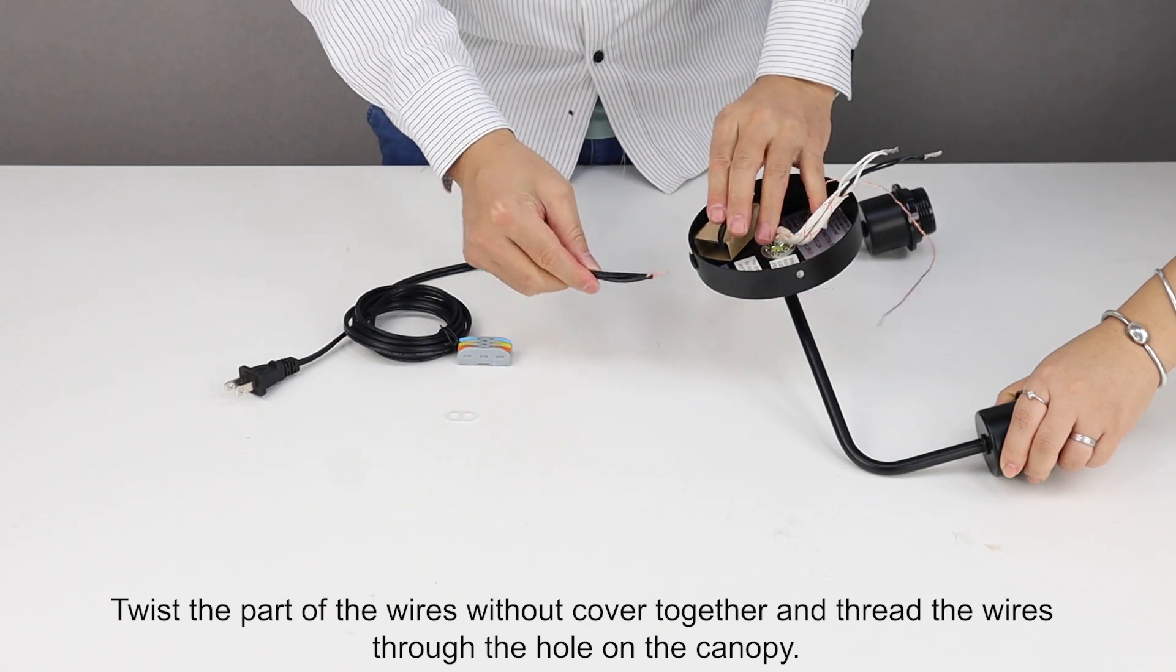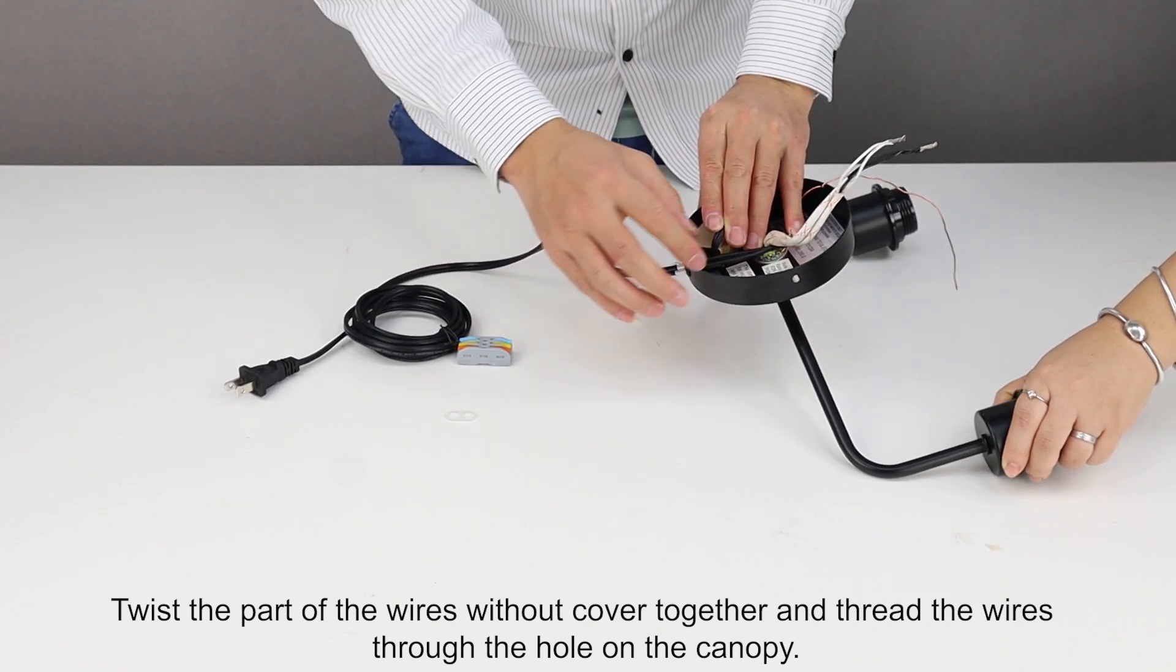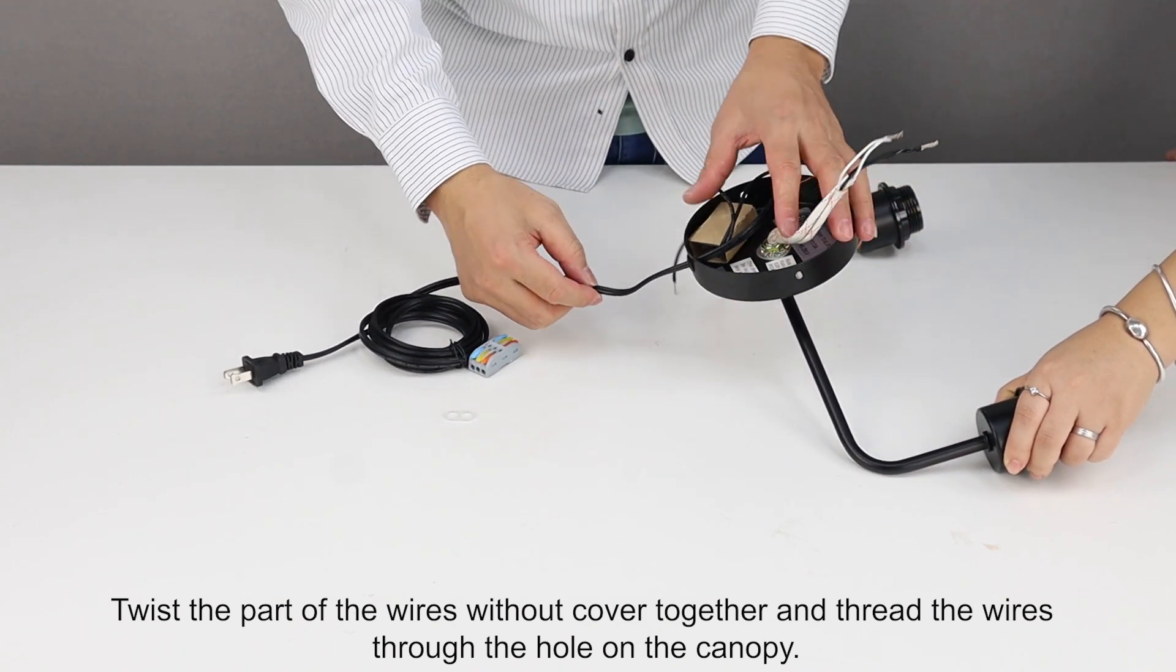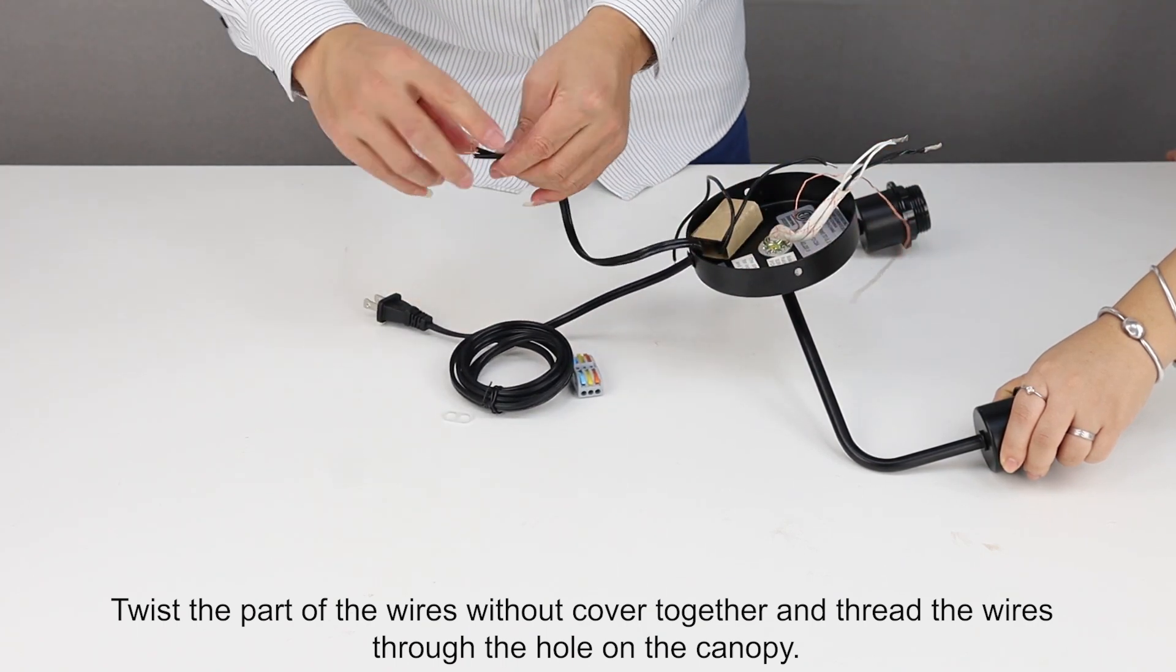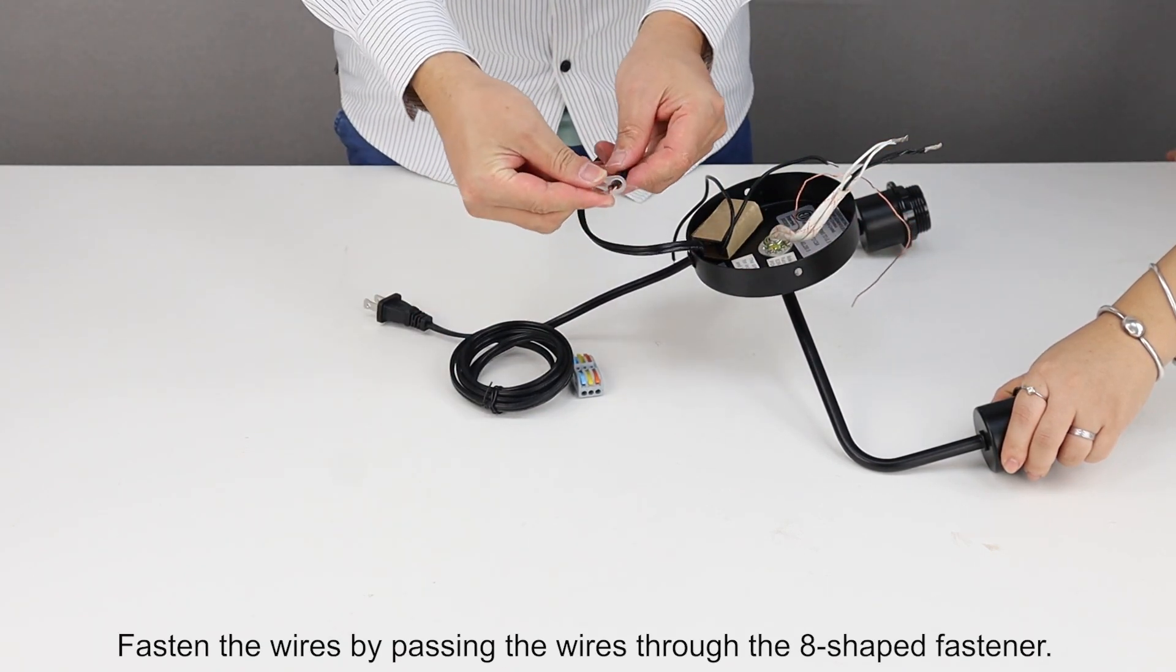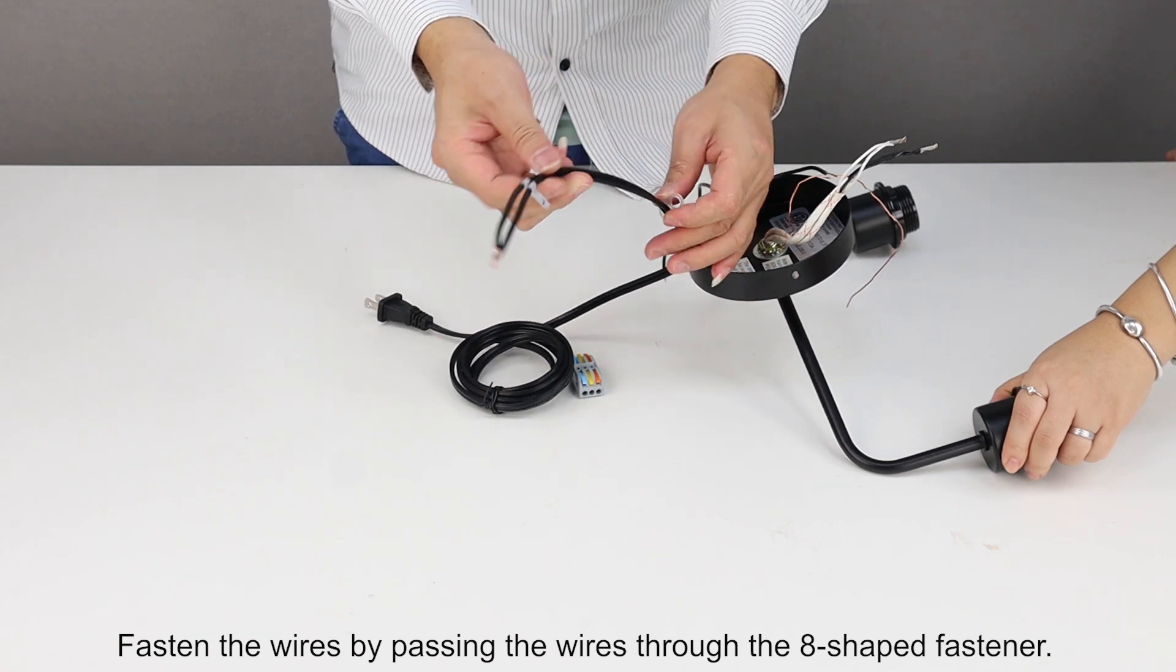Twist the part of the wires without cover together and thread the wires through the hole on the canopy. Fasten the wires by passing them through the H-shaped fastener.